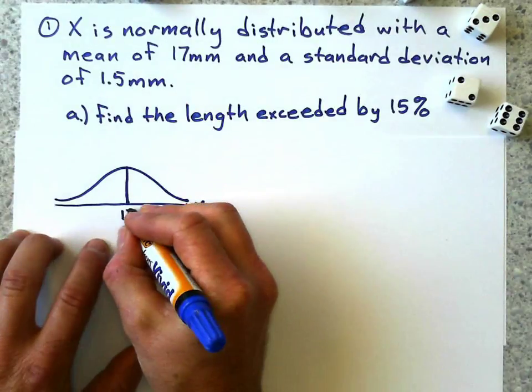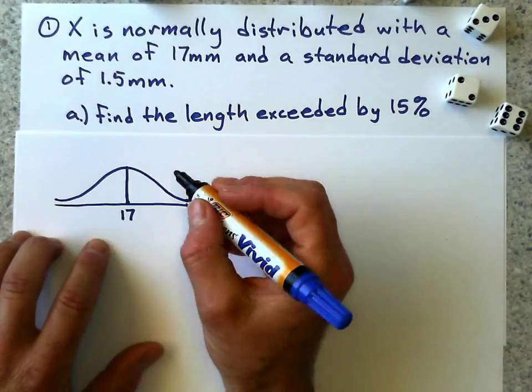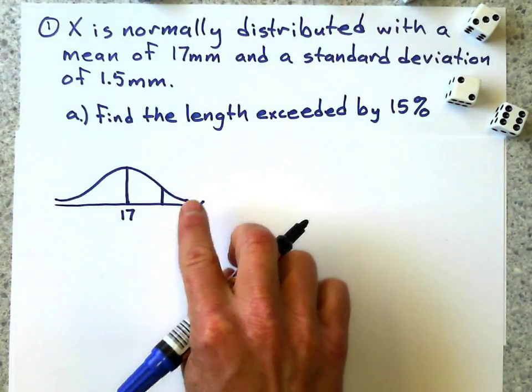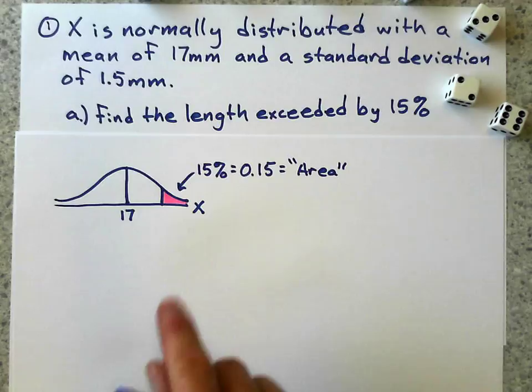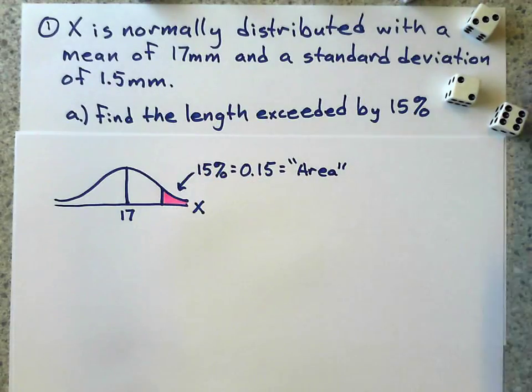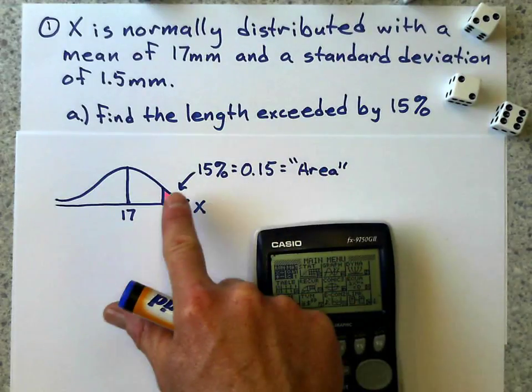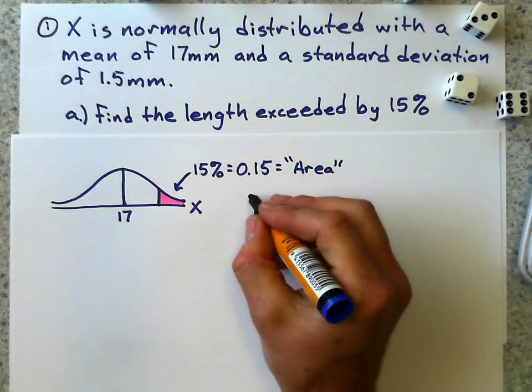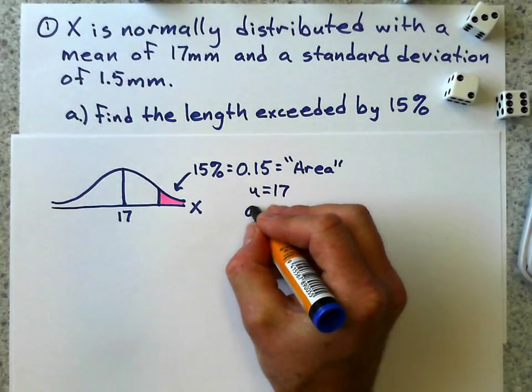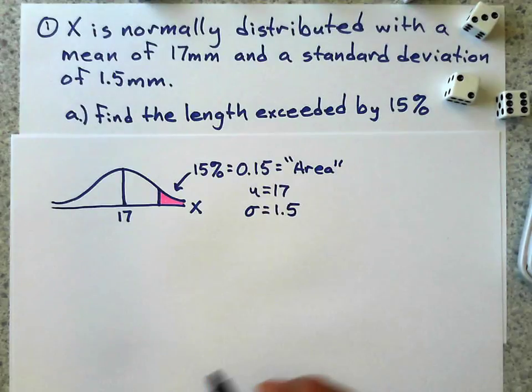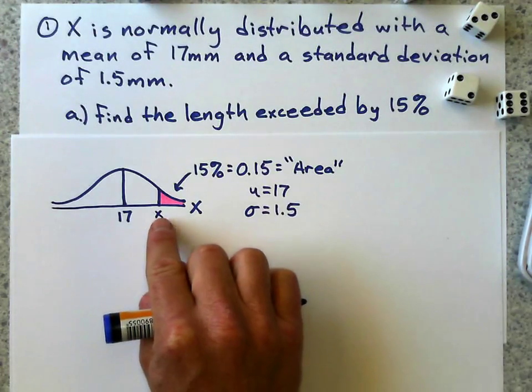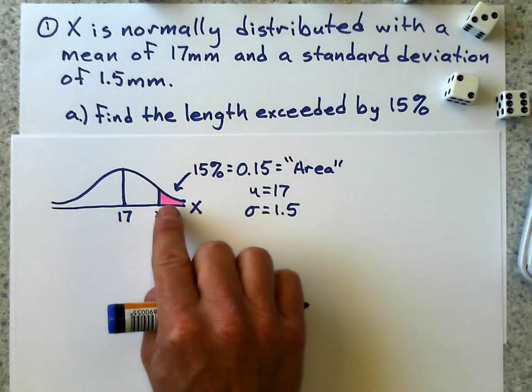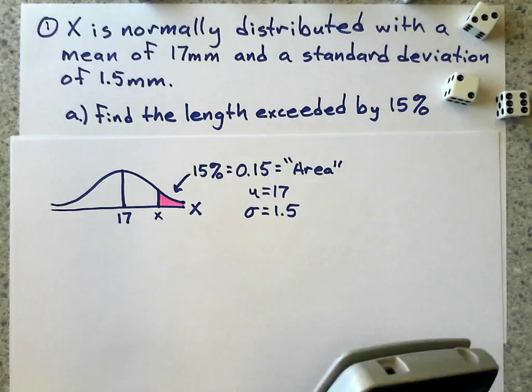The length exceeded by 15% is going to be that top 15% right there. So I shaded in that top 15% as a decimal at 0.15, and on the graphics calculator it's going to be classified as the area, because the area under the curve is the probability. So let's get our stats here. Our mean is 17, and our standard deviation is 1.5. Now, before I get the calculator, that value right there is what I'm trying to figure out. That's the actual measurement where 15% of the data exceed it. Now, we'll show you how to do it on here.